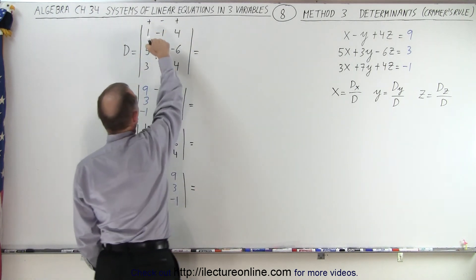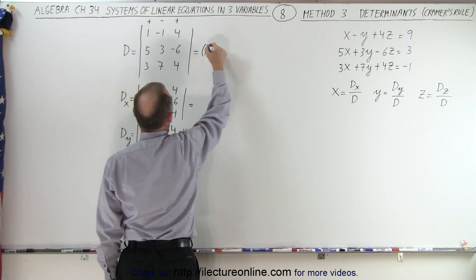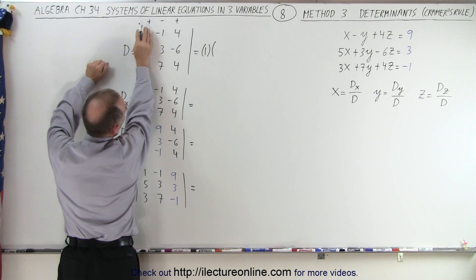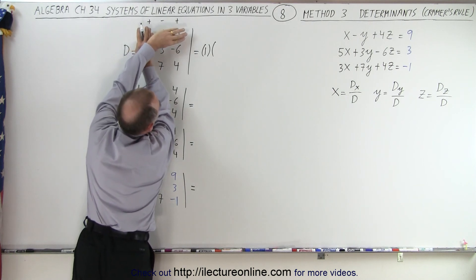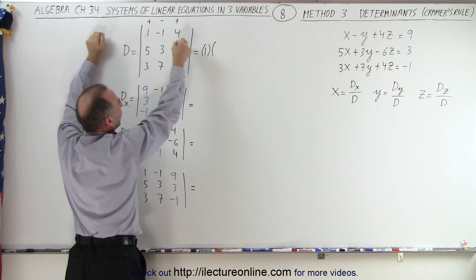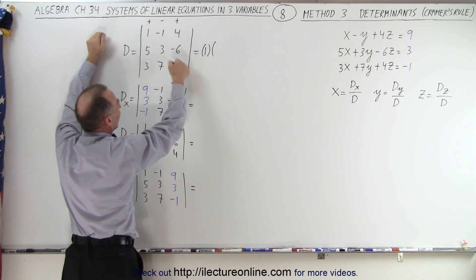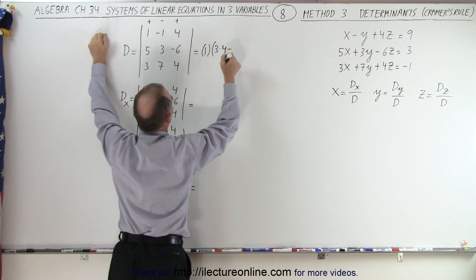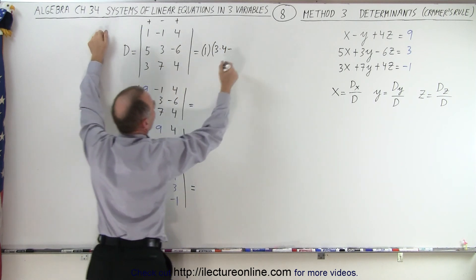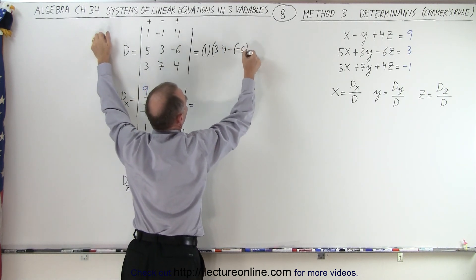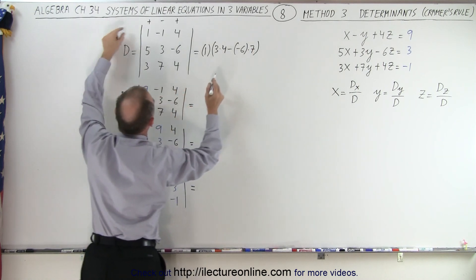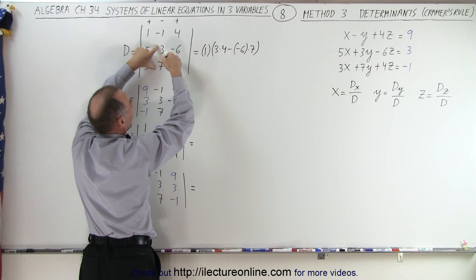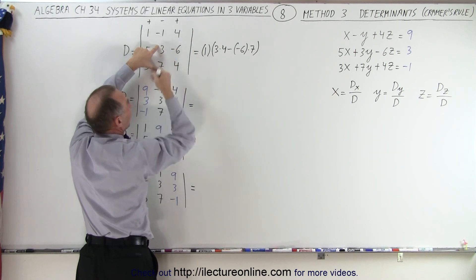Starting out, we take the first number, 1, and we multiply that times the mini-determinant. We cover this column and this row, so you end up with these four numbers. So you're going to multiply 3 times 4, and subtract from that the product of these two numbers — there's a negative 6 there — times 7. So it's this number times the mini-determinant: this number times this number, minus this number times this number.